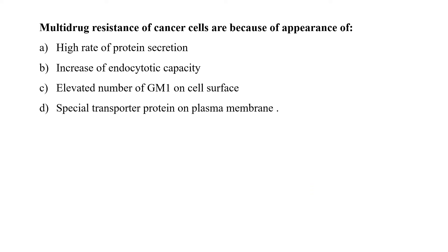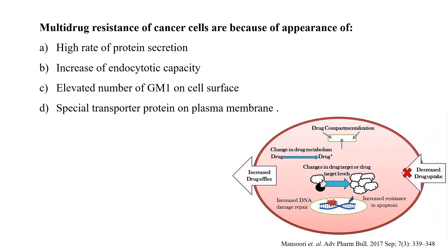Multi-drug resistance of cancer cells are because of the appearance of high rate of protein secretion, increase of endocytotic capacity, elevated number of GM1 on cell surfaces, or special transporter protein on the plasma membrane. Multi-drug resistance or MDR in the cancer chemotherapy has been pointed out as the ability of cancer cells to survive against a wide range of anti-cancerous drugs. One of the mechanisms of MDR is enhanced efflux of drugs through the specialized transporters, like ABC transporters, which flush out the drug outside the cancer cell, leading to the less absorption of drug to the cell. So option D would be the correct answer.